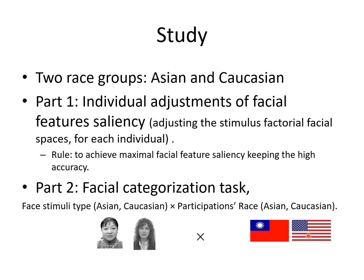We conducted a study to analyze these properties. We formed two race groups of participants: Asian and Caucasian. In the first part of the study, we made adjustments to the saliency of perceptual features to equalize them using appropriate methods. In the second part, we ran two groups of subjects from different regions — Taiwan and America — and showed them two different sets of faces: Asian faces or American faces. These kinds of studies are designed to test what is known as the other-race effect, and here we used them to analyze properties of underlying perceptual networks.